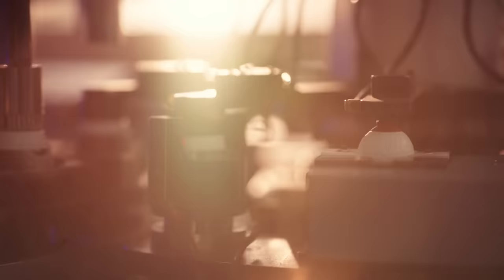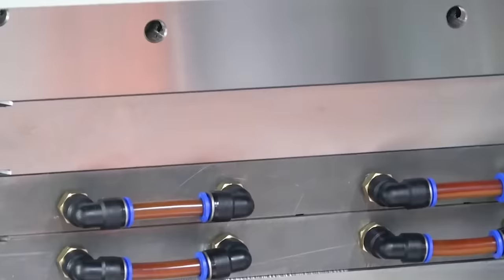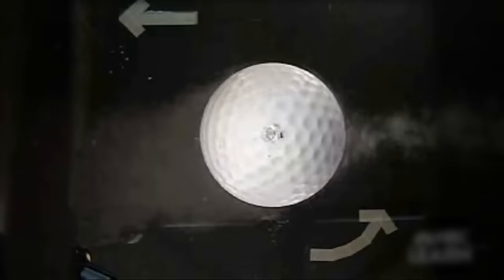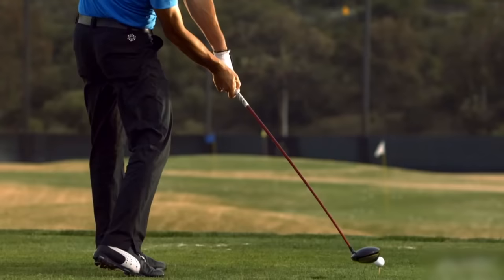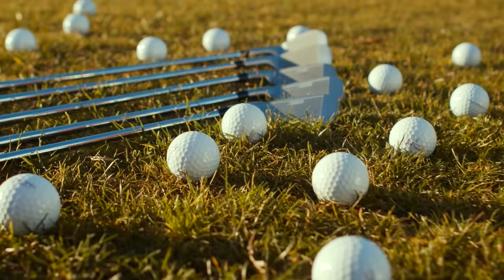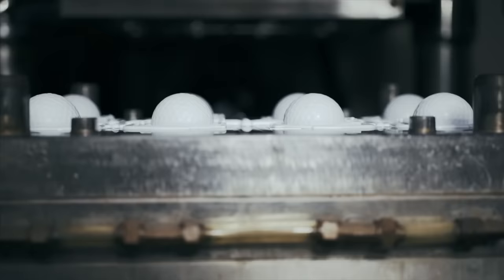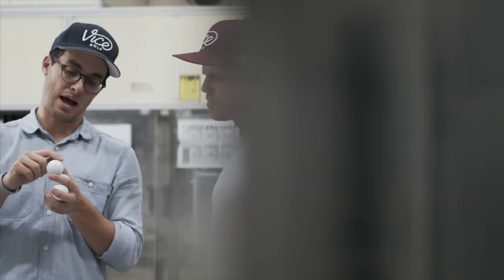The bonded core and casing are placed in a compression mold once again. The mold has a dimple pattern and the desired golf ball shape engraved on its inner surface. Dimples are crucial for the aerodynamics of the ball, as they help reduce drag and provide lift during flight. Dimple patterns can vary depending on the brand and model of the golf ball. Heat and pressure are applied to the mold, compressing the core and casing together and giving the ball its final shape.